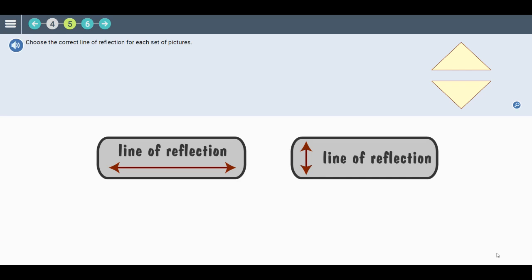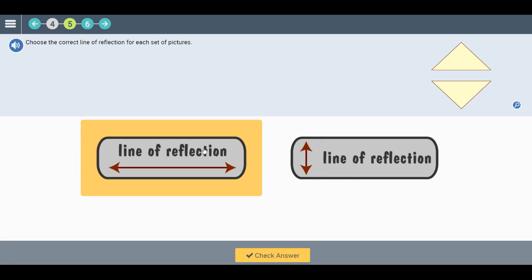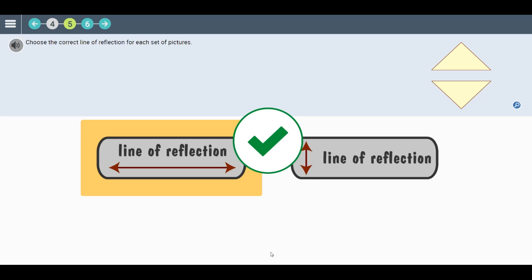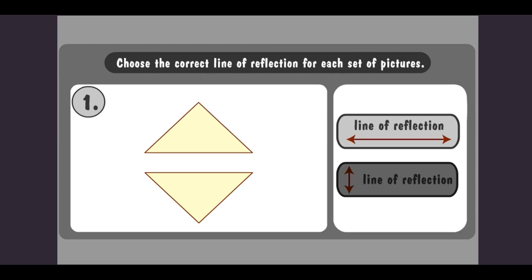Click on the correct line of the reflection for each set of pictures. Okay, let's check the answer together. The line of reflection goes straight across. Got it? Click the button to move on.